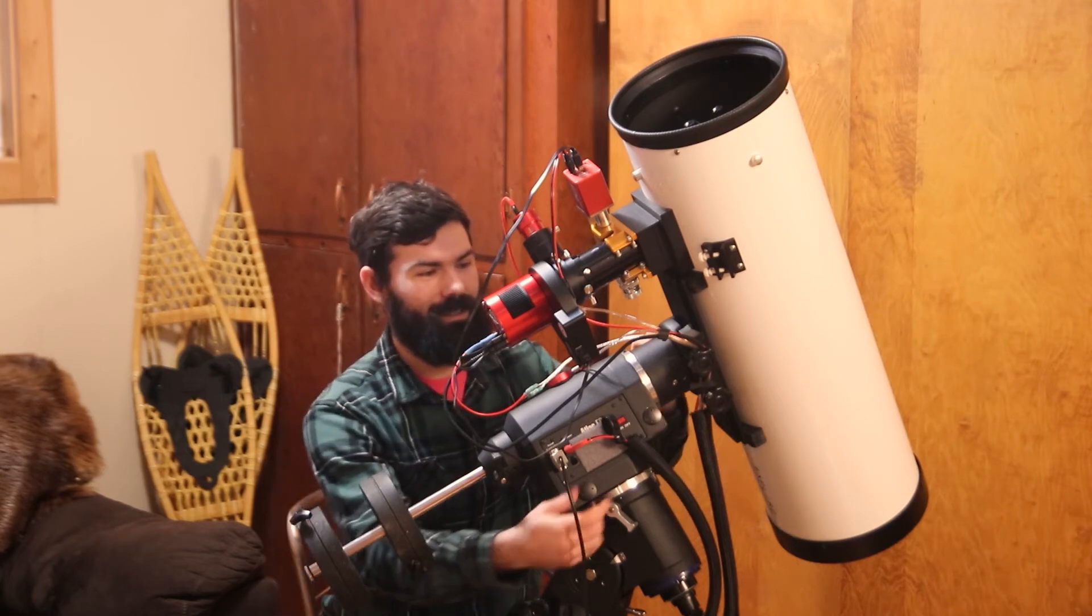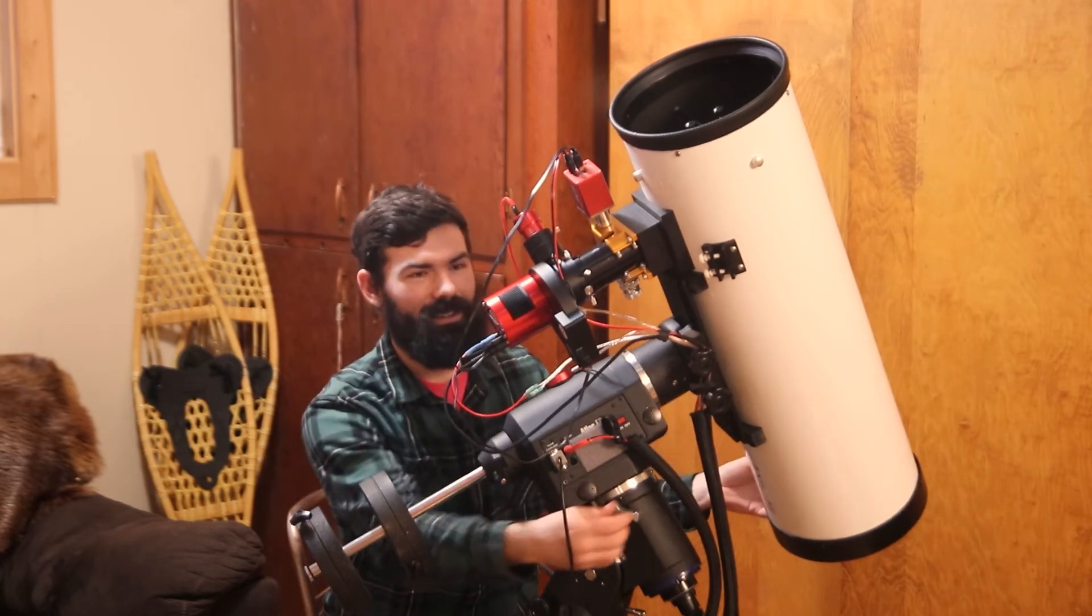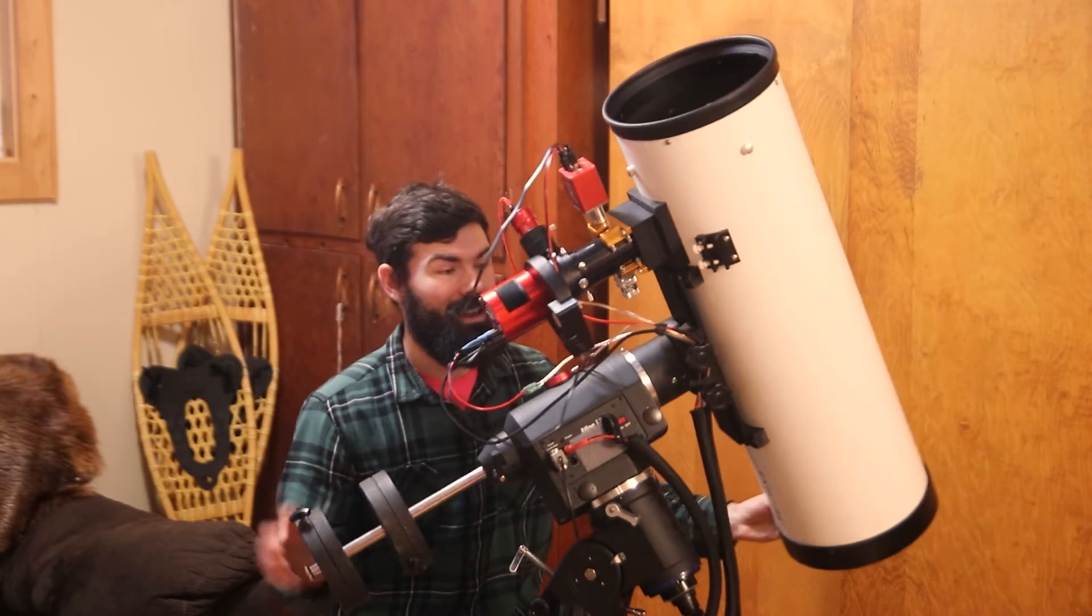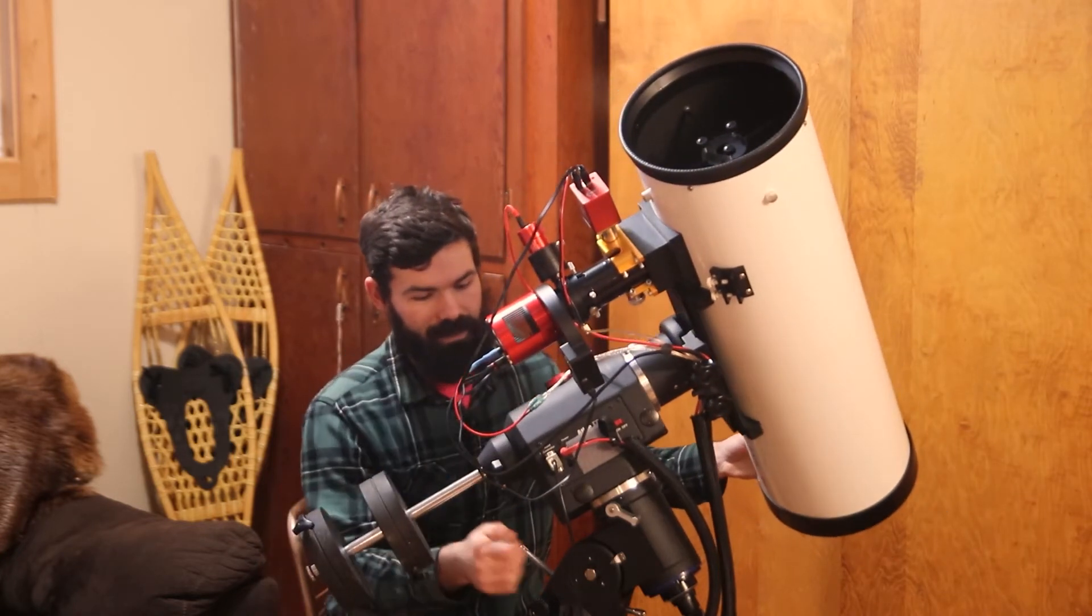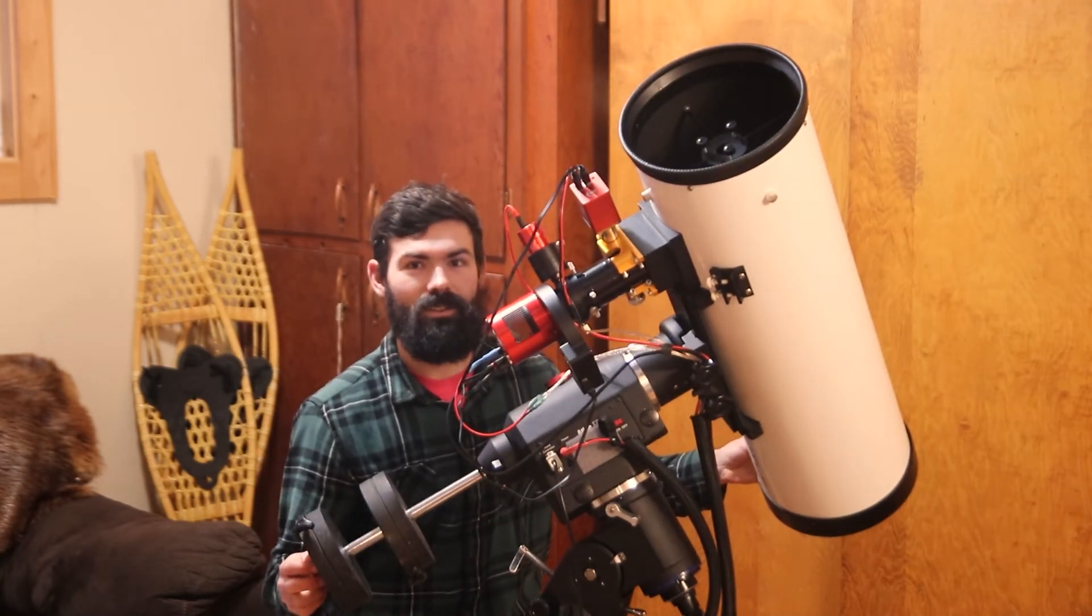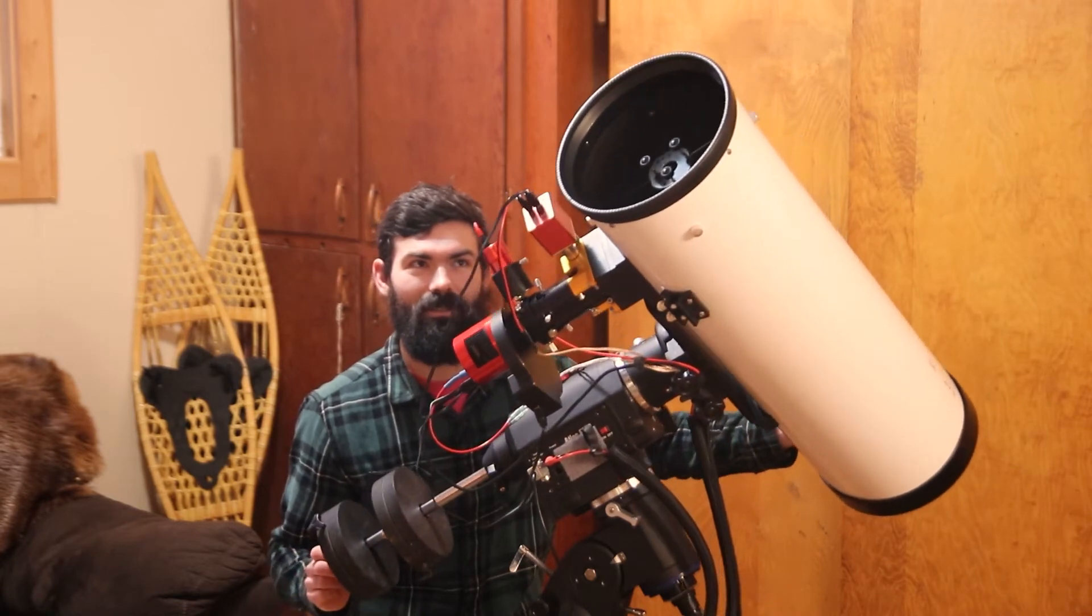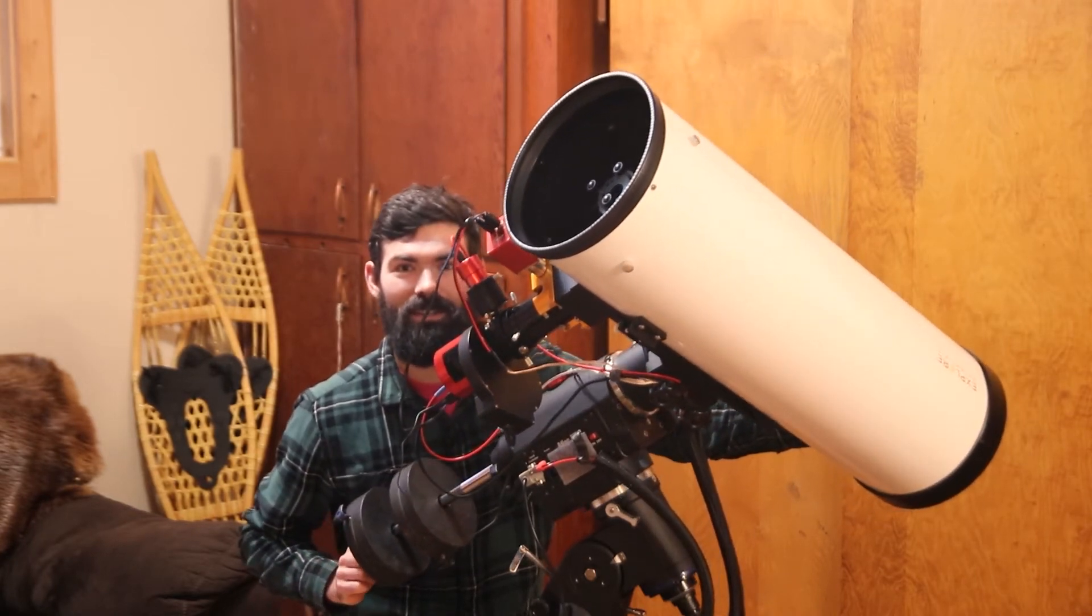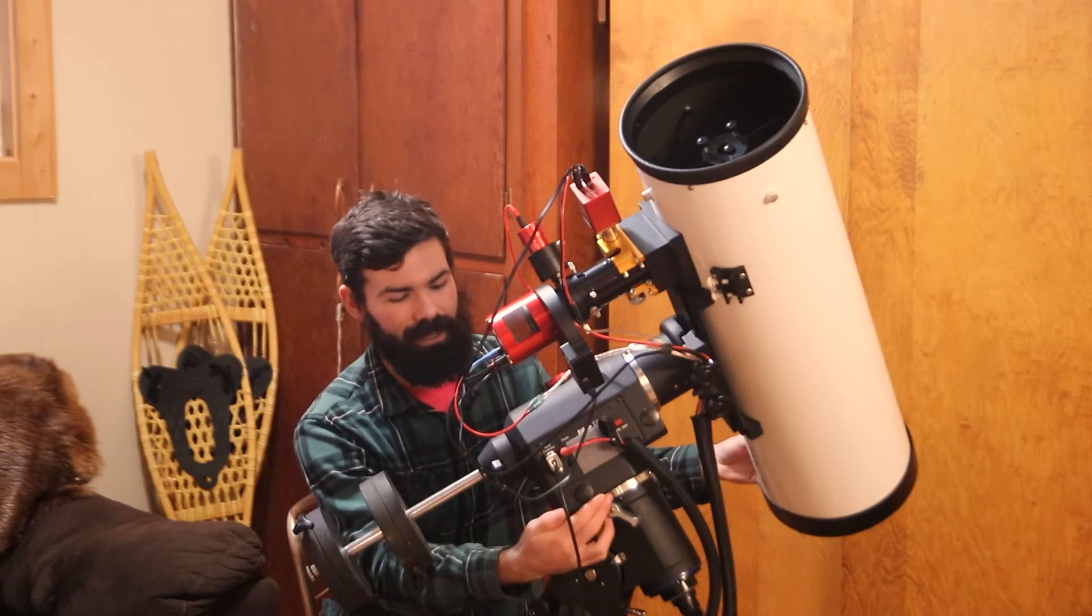The mount is the most important part of your AP rig. It does a couple things. For one, it just lets you point to whatever you're trying to take a picture of. And then also, it's what's going to be slowly tracking against the rotation of the earth throughout the night, holding whatever you're taking a picture of steady in the field of view of your camera.